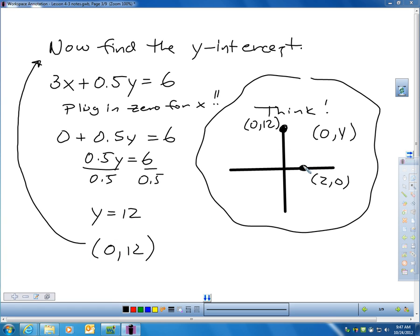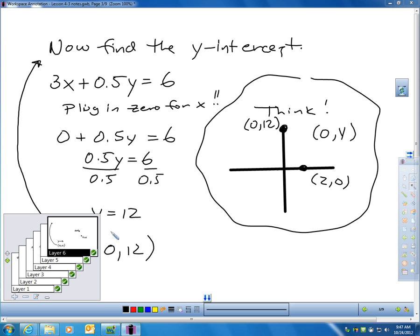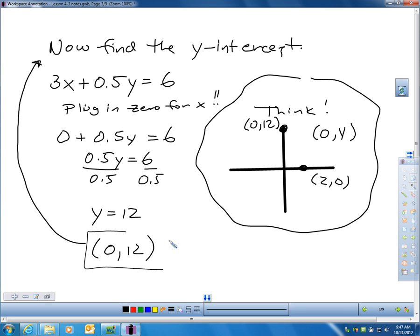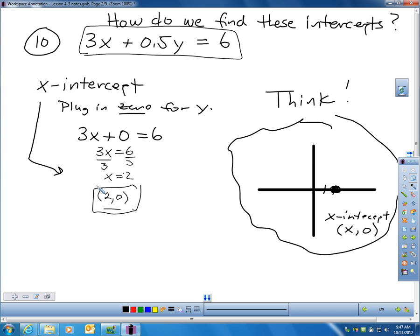So if I actually did graph this problem, there's the point (2, 0), there's the point (0, 12). All I'd have to do is get my ruler out and draw a line through it and put arrows at the end, and I'd be done. They did not ask me in this question to draw a graph. They just asked me to find the intercept. So I found them both. (0, 12) is the Y intercept. And if I go back a slide, (2, 0) was the X intercept.